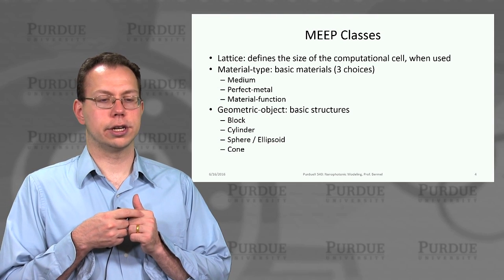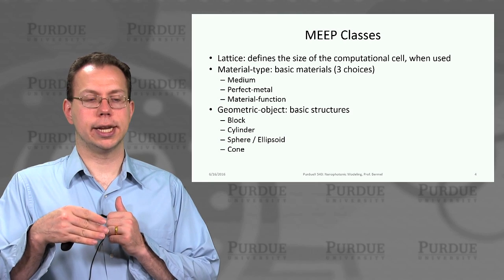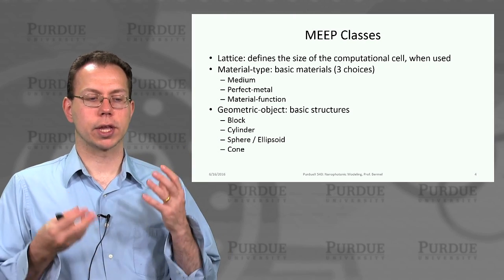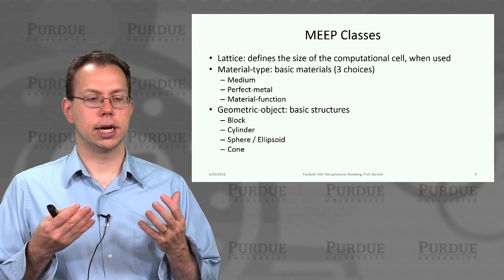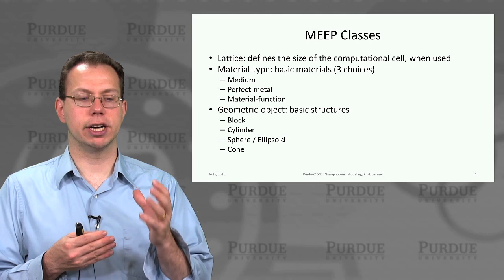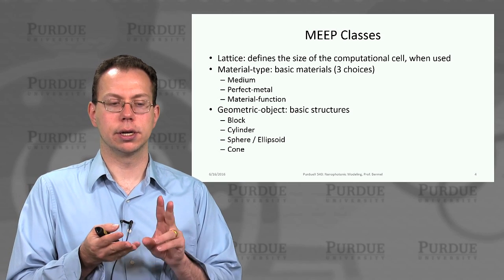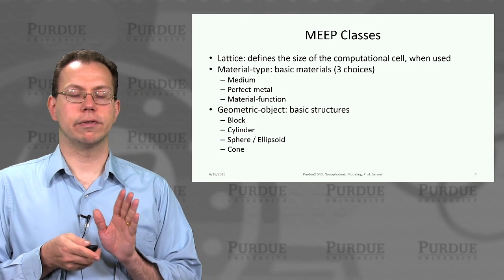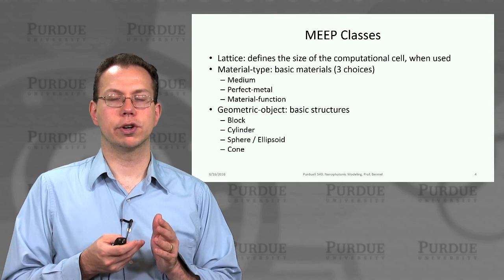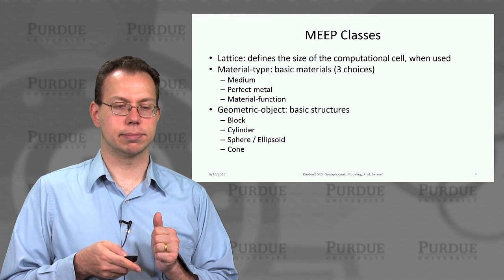A third important class is geometry. Once you have the lattice and the material, that sets the stage for geometry, because you need the intersection of position within the lattice and material. The idea is not to have a function for every possible geometry, but to have basic geometric objects — like a block, cylinder, sphere, or cone — that you can combine and superimpose. If you have an unusual geometry, it may require some creativity, but it's usually possible to construct it from these objects.